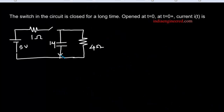This question was asked in the GATE electrical paper. In the circuit, the switch S is closed for a long time — that means initially the switch S is closed for a long time and is opened at t equal to 0. At t equal to 0 plus, what is the current I? The current I is the current through this capacitance.